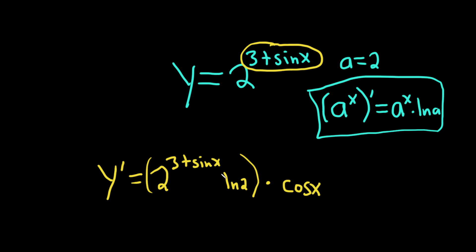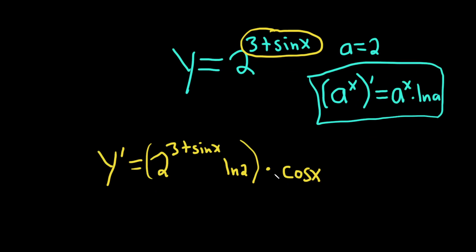Remember, that's how the chain rule works, right? You always take the derivative of the outside, evaluate it at the inside, and you multiply by the derivative of the inside. That's pretty much it.